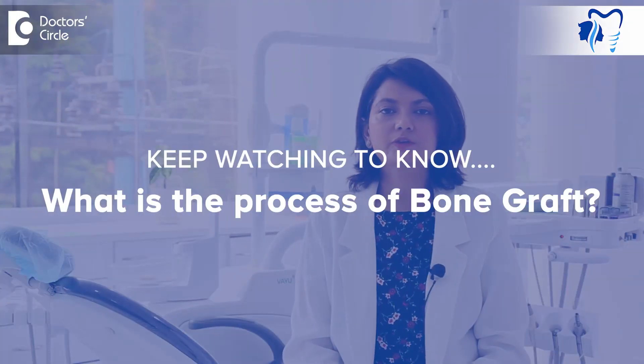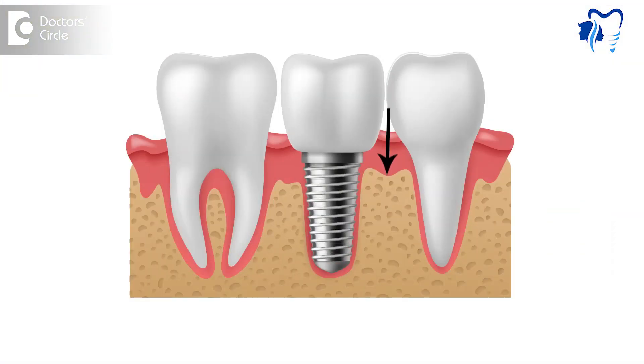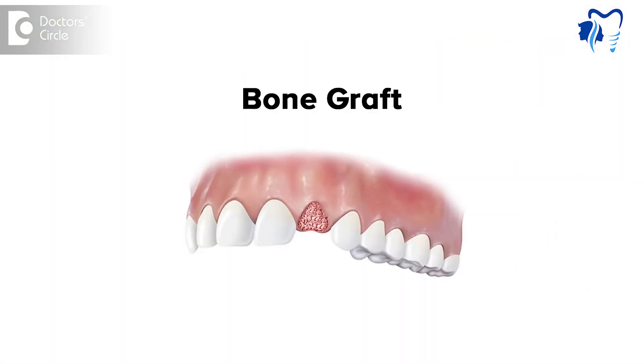So what is the process of bone graft? First of all, we understand what the defect is and what amount of bone graft is needed. Then we decide what type of bone graft to use. Once that is done, the area is accessed, a proper cleaning and debridement is done, the inner mucosa is opened, the area is exposed, and then the graft material is packed into that area.